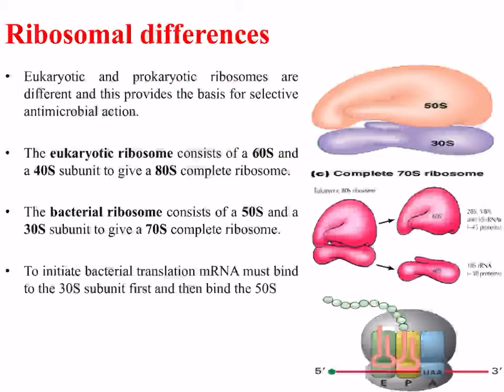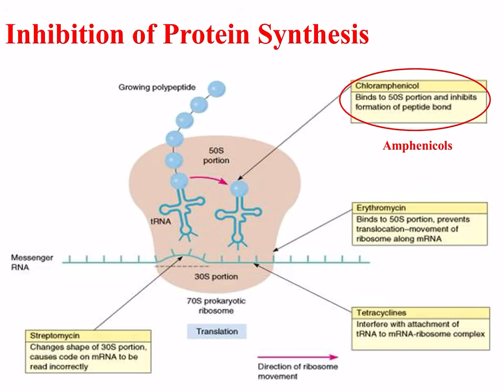To initiate bacterial translation, mRNA must bind to the 30S subunit first and then bind to the 50S. There are a number of different steps in the formation of the ribosome as well as the processing of mRNA where antibacterials could potentially interfere. Shown in this diagram are four such places where antibacterials can interfere. Starting with the amphenicols, highlighted in red, which bind to the 50S portion.